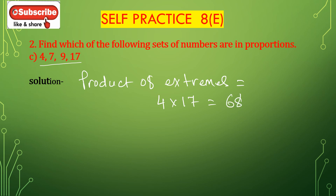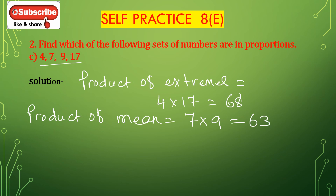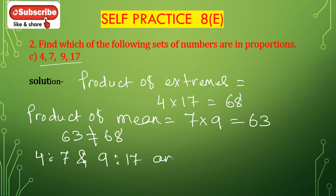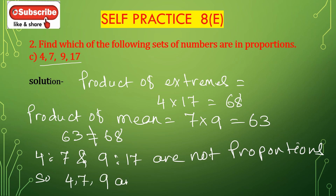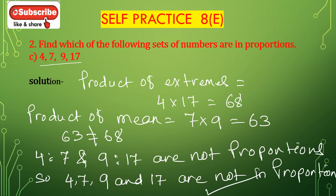And product of means is 7 multiplied by 9, which equals 63. Since 68 and 63 are not equal, 63 is not equal to 68. So 4 is to 7 and 9 is to 17 are not proportional. Therefore these numbers 4, 7, 9, and 17 are not in proportion.